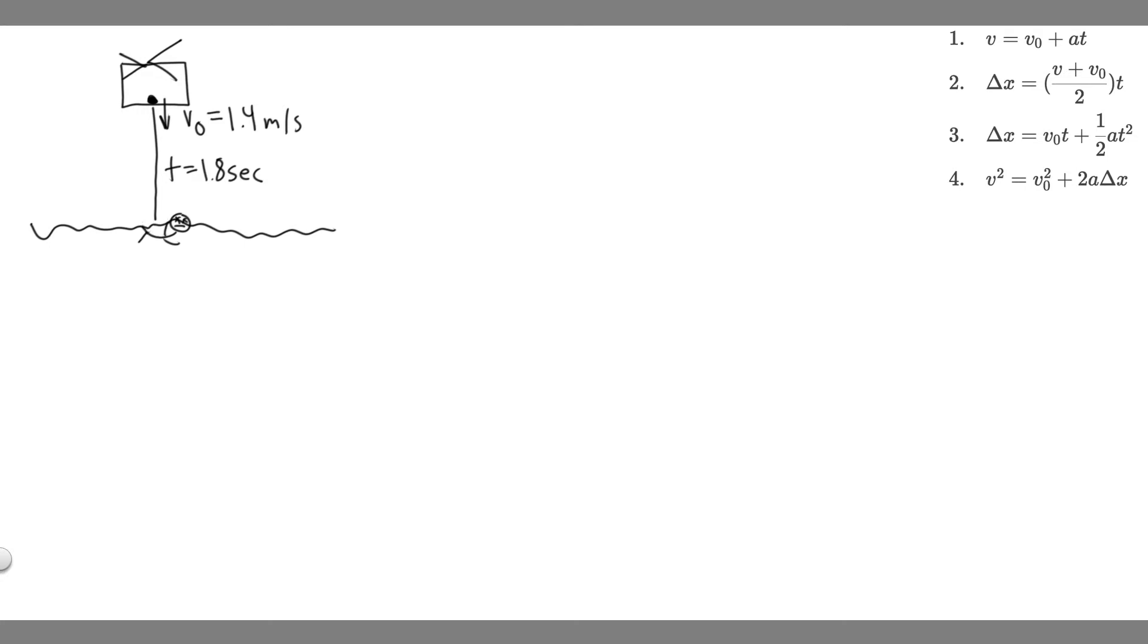Let's start with Part A, which wants us to write down the givens. What information do we know? We know the initial velocity of the life preserver is 1.4 meters per second, but I'm going to say it's negative 1.4 meters per second because it's going downwards.